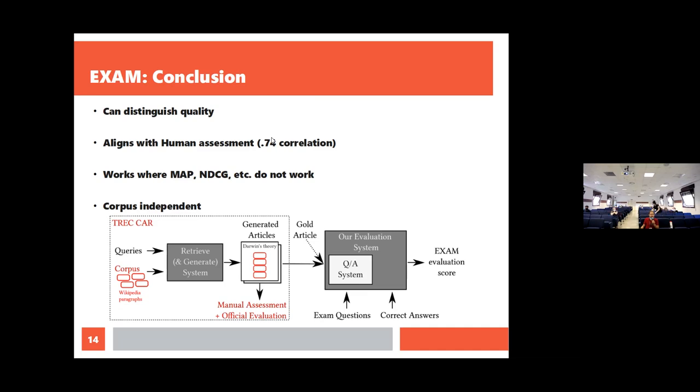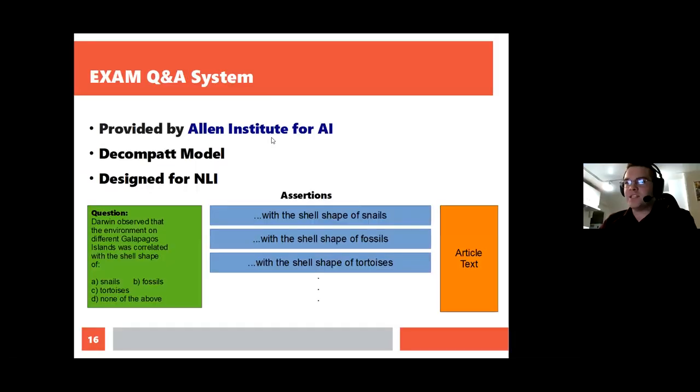So I was wondering if you ever tested this evaluation, the EXAM that you are proposing, with different QA systems and see how robust it is to different systems. So we had tested it. The QA system we used in particular was one from the Allen Institute for AI. We didn't test out multiple QA systems, but that would be one place to expand upon. Laura, did you have any thoughts you wanted to add? Maybe I misunderstood the question. Were you asking about different resilience to other QA systems or resilience to other retrieve and generate systems?